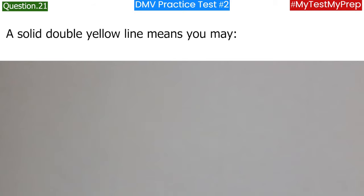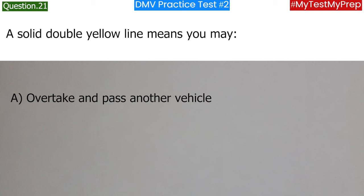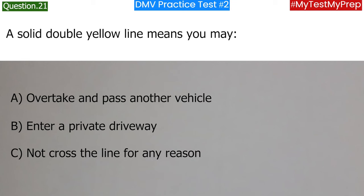A solid double yellow line means you may: a. Overtake and pass another vehicle; b. Enter a private driveway; c. Not cross the line for any reason. Answer: b. Enter a private driveway.